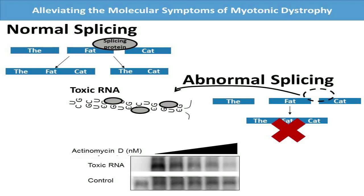Let's think of a gene as a sentence: 'The fat cat.' If the word 'fat' can be spliced, that means there are two possible variations for that sentence — one that includes the word 'fat,' and one that does not. This process is performed by splicing proteins, which act as the editors of our genetic sentences. You can see how one gene can produce more than one type of protein, depending on what parts of the gene are taken in, left out, or mixed and matched. It's important to keep this process working perfectly, because we rely on protein variation to develop normally.